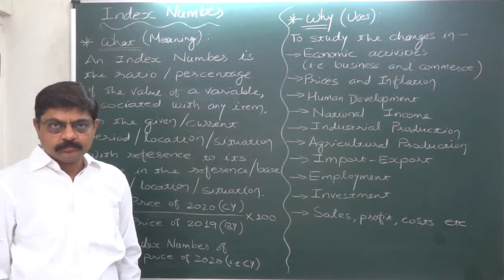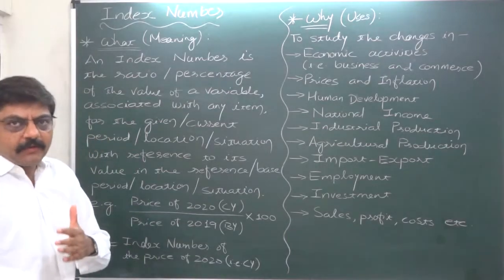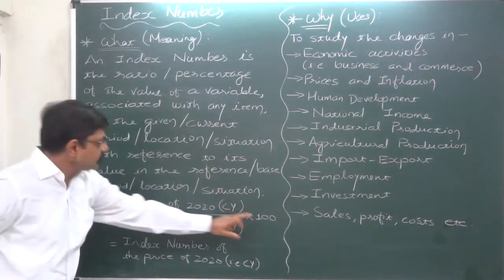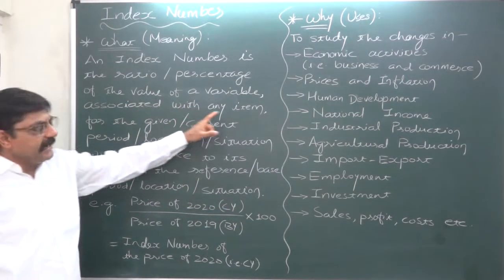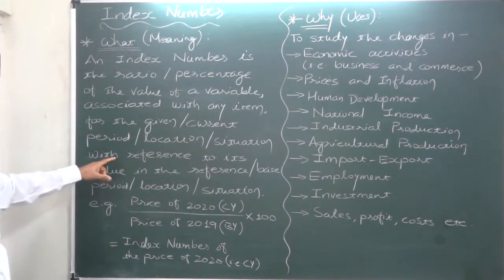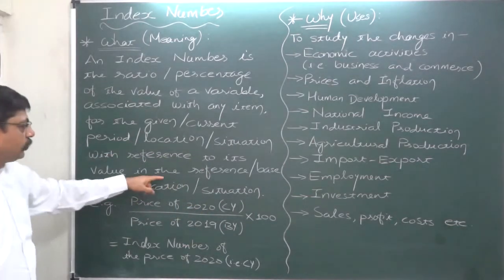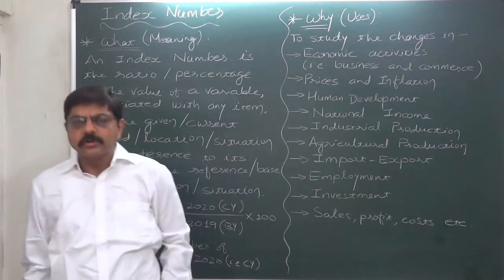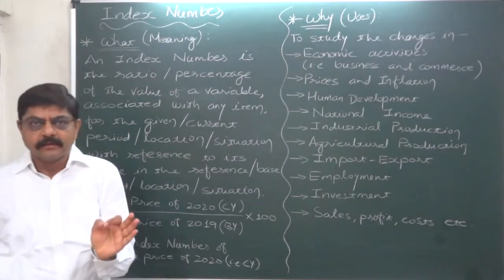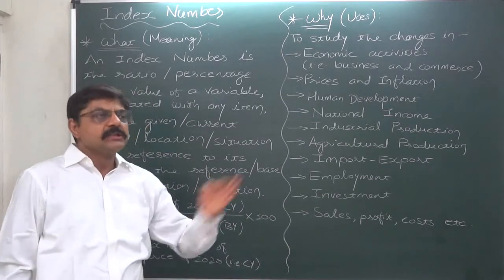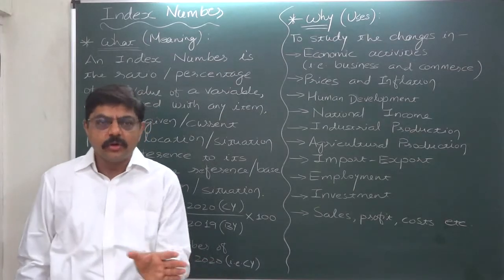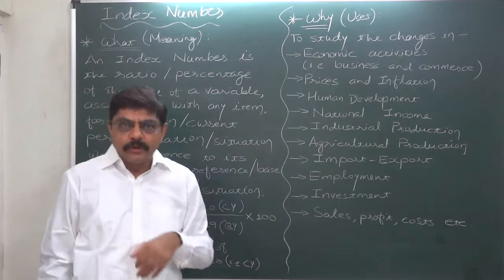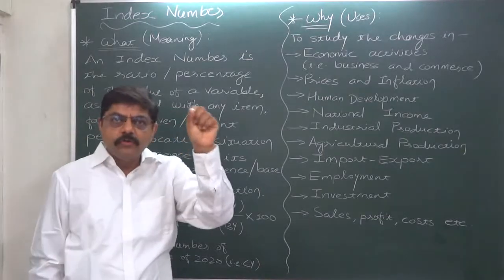So to summarize: an index number is the ratio or percentage of the value of a variable associated with any item for the given or current period or location or situation, with reference to its value in the reference or base period or location or situation. The purpose of calculating index number is comparison — what is at present as compared to some pre-decided past. That pre-decided past is called the base or reference point, and we want to know the situation at the current point of time.